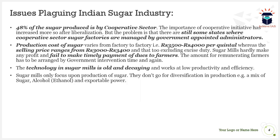The production cost of sugar varies from factory to factory, and on average it is rupees 3,500 to 4,000 per quintal, whereas the selling price of sugar is only rupees 3,000 to 3,400 per quintal. You can clearly see that production cost is more than the selling price, causing losses to sugar mills. This selling price is also excluding excise duty, so sugar mills hardly make any profit.